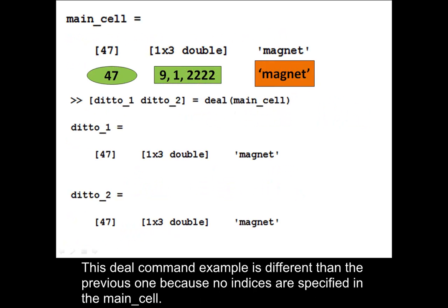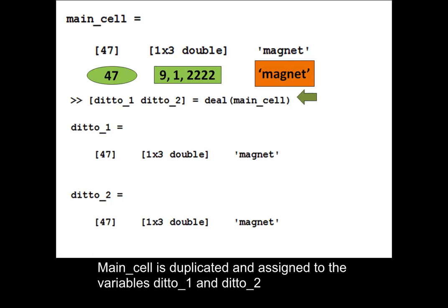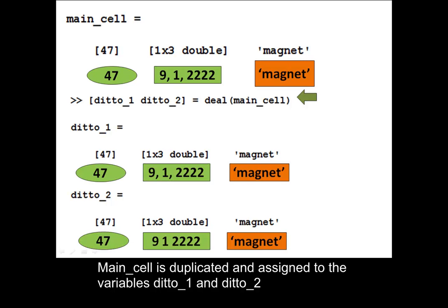This deal command example is different than the previous one because no indices are specified in the main_cell. Main_cell is duplicated and assigned to the variables ditto1 and ditto2.